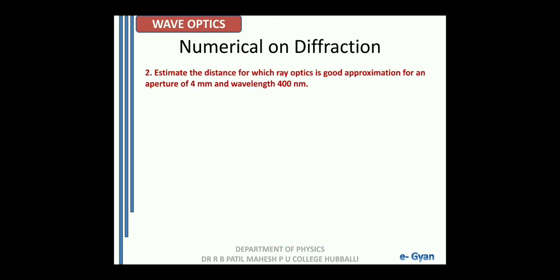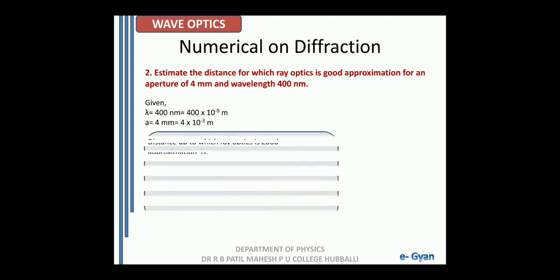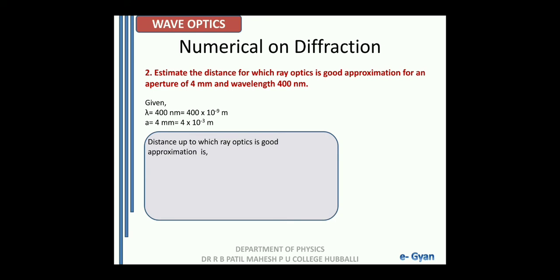Next numerical on diffraction: estimate the distance for which ray optics is a good approximation for an aperture of 4 mm and wavelength 400 nm. The distance up to which ray optics is a good approximation is called the Fresnel distance, with formula z = a² / lambda. Substituting the values, we get z = 4 meters.